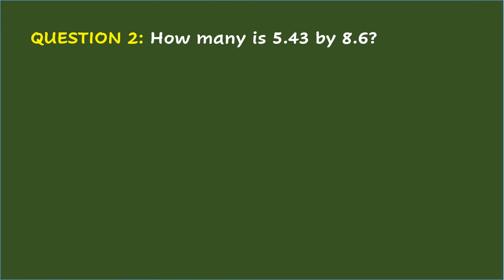Question 2: How many is 5 and 43 hundredths times 8 and 6 tenths? When multiplying decimals, write the decimals vertically. Then multiply mixed decimals just like whole numbers, beginning from right to left. Multiply the bottom decimal, or multiplier, by the top decimal, or multiplicand.